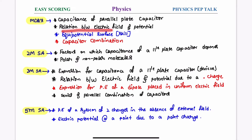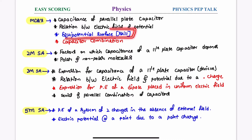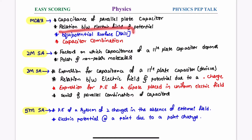The relation between electric field and potential is an easy relation that can be used. Just one-step answer is numerical. It is a skill-based question that can appear as an MCQ.